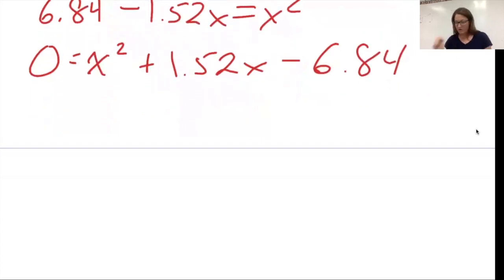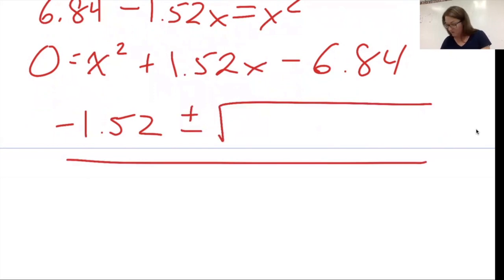I'm now ready to do the quadratic. Negative B plus or minus the square root of B squared minus 4AC all over 2A.